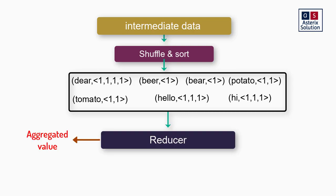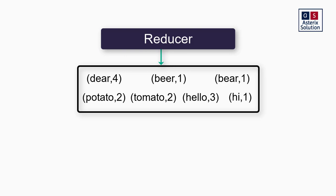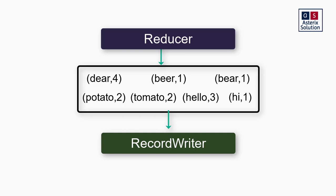In the reducer, you write the code for aggregation. In this scenario — finding how many times a word has been repeated — I just need to sum the values, because all values are ones. So I'll know how many times 'deer' or 'beer' was repeated. After this stage, the reducer writes the output: 'deer, 4' because it aggregated four ones. For each word, the sum is emitted as the final output.